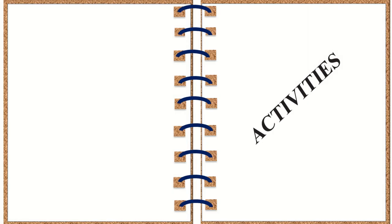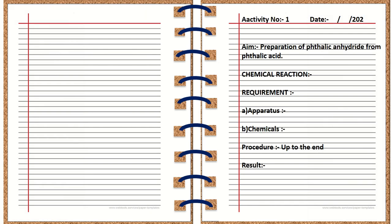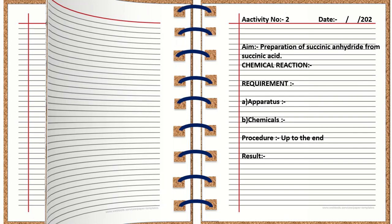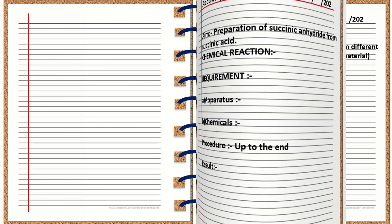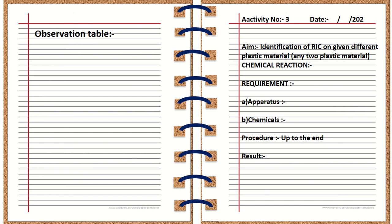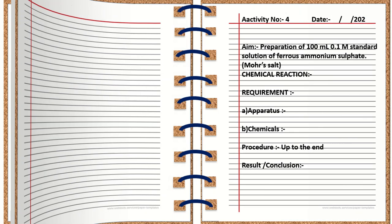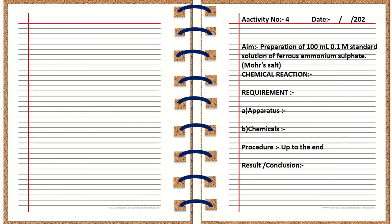Next are the activities. Activity Number 1: date, aim, chemical reaction, requirements, apparatus, chemicals, procedure, and result — all on the right-hand side. Activity Number 2: again on the right-hand side. For any activity, keep the left page blank. Activity Number 2: date, aim, chemical reaction, requirements, procedure, and result on the right-hand side. Same for Activity Number 3: date, aim, requirements, apparatus, chemicals, procedure, and result on the right-hand side. If any activity has an observation table, it should be on the left-hand side — the front of that page. There are four activities in total. All activities should be written on the right-hand side except for the observation table.